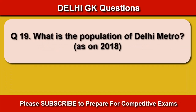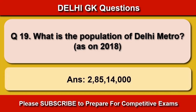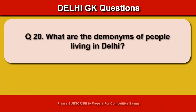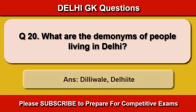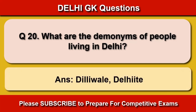What is the population of Delhi metro as of 2018? 2 crores 85 lakhs 14,000. What are the demonyms of people living in Delhi? Delhiwale, Delhiite.